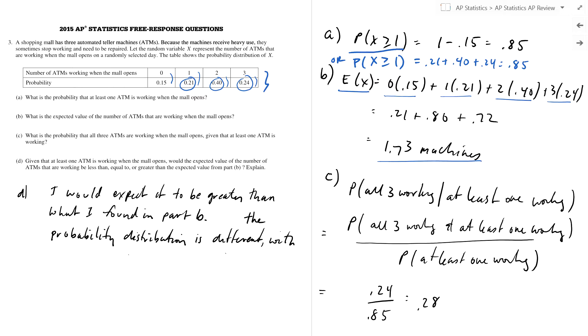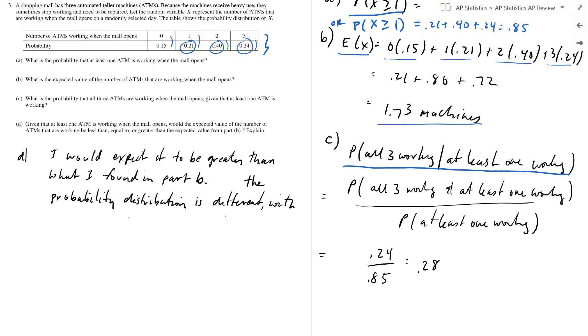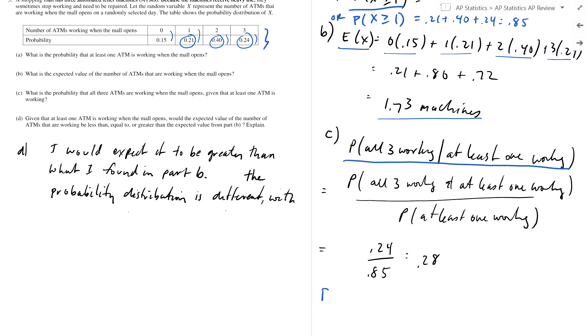Part C: what's the probability that all three ATMs are working when the mall opens given that at least one ATM is working? So that's this guy right here. To do A given B, you have to remember this: the probability of A given B is probability A and B divided by the probability of what's given, B.